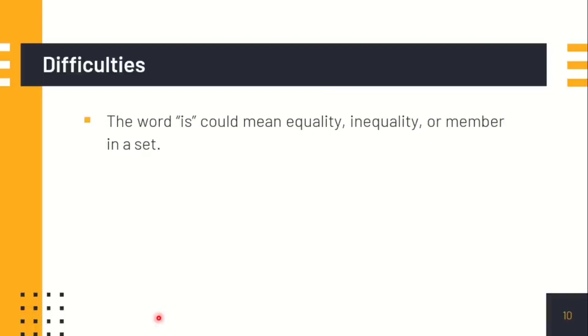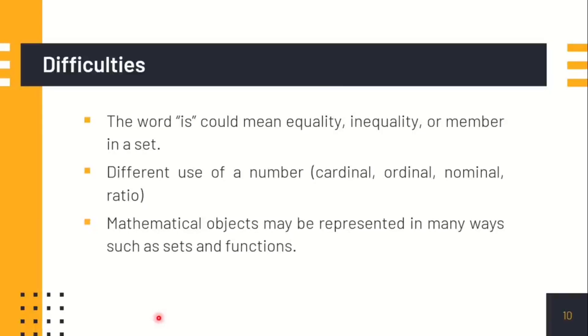For example, in mathematics, the word is could mean equality or inequality or a member in a set. Another thing is the different use of a number like the cardinal, ordinal, nominal, and ratio. Mathematical objects may be represented in many ways such as the sets and the functions. The words and and or may be used differently in mathematics compared to English. And there are still so many words in English language that is used differently in mathematics.